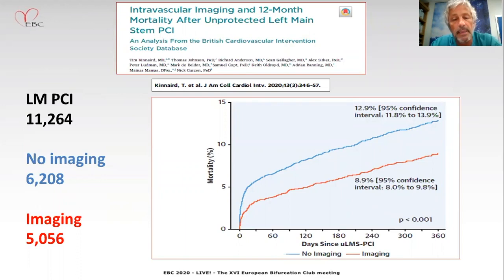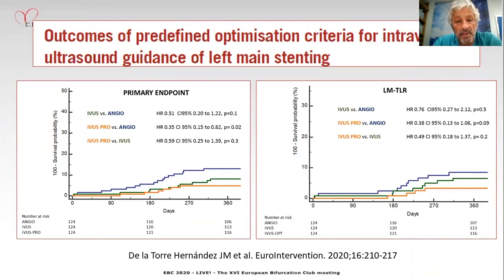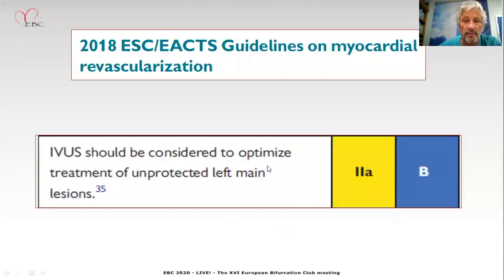This recently published paper shows the results of a large registry in the UK, over 11,000 patients, with an important difference in mortality related to the use of imaging — which was an independent predictor — and also showing that operator volume was in parallel increasing with the benefit derived from IVUS. From our group, we have a study showing how the use of a protocol with predefined optimization criteria provides an additional prognostic benefit compared to the use of IVUS without a protocol or compared to angiography alone.